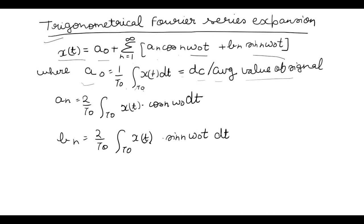an is equal to 2 upon T0, integration over T0 of x(t) cos(nω₀t) dt, and similarly bn is 2 upon T0 integration of x(t) over time period T0 into sin(nω₀t) dt. In this case an equals a minus n, and bn equals minus b minus n.